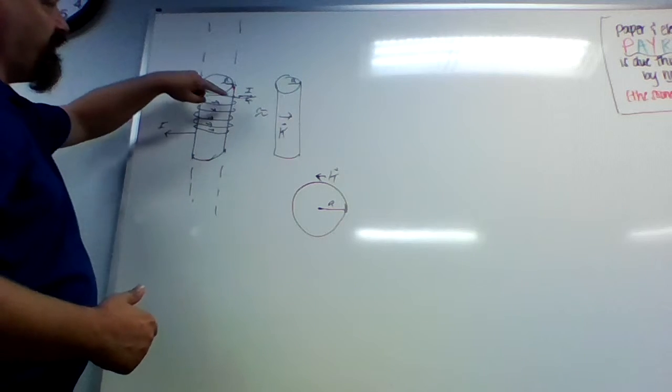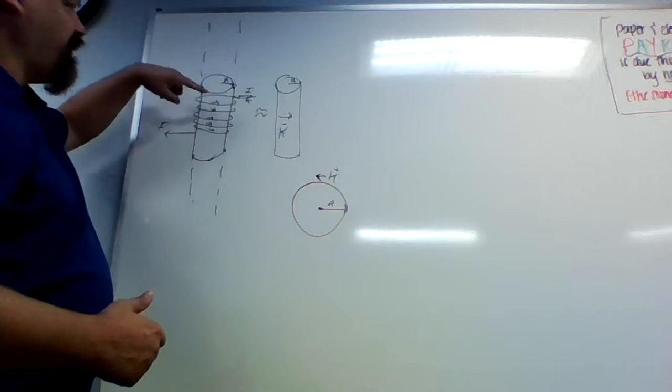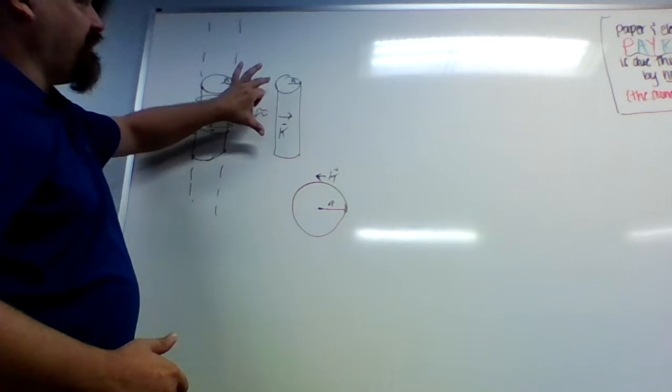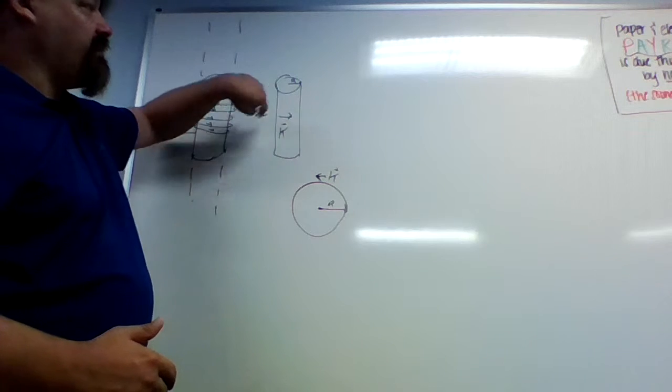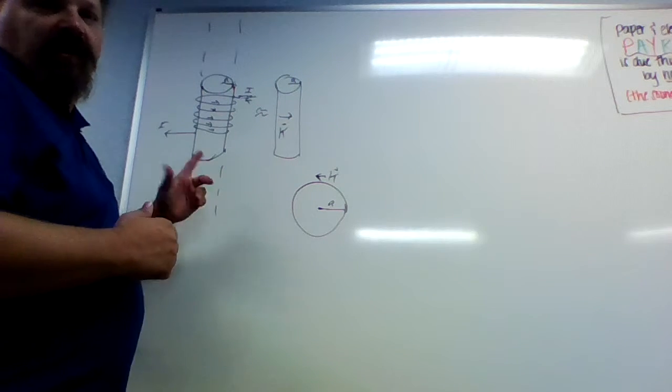And it could either be with the current I going around n loops per unit length. So we can treat that the same as if there's a surface current K going in the same direction around the cylinder.